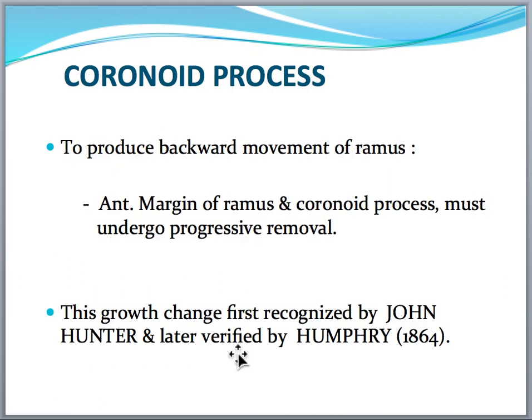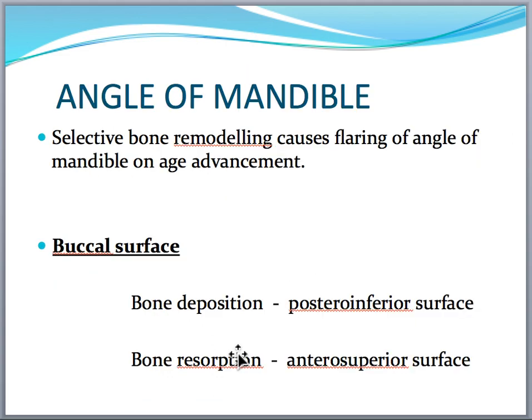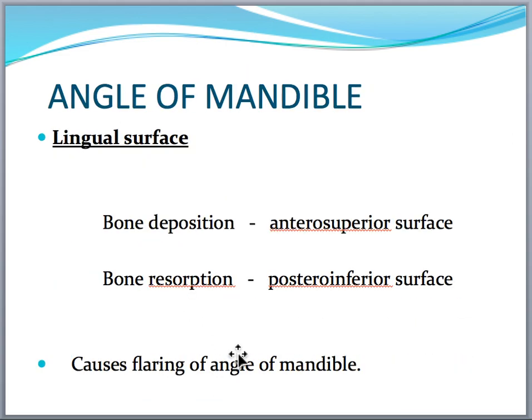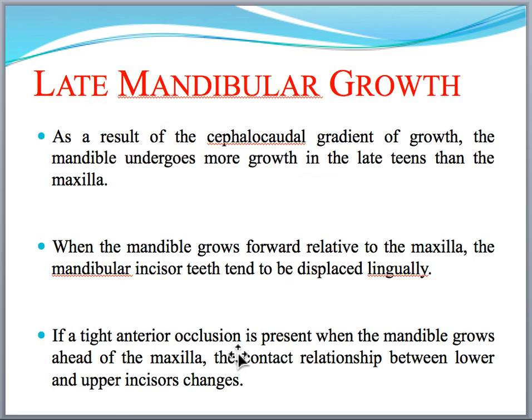Next comes the sigmoid notch, coronoid process, growth at the ramus, and the angle of the mandible. For the angle of the mandible, describe both the outer surface and lingual surfaces, including the lingual tuberosity. The antegonial notch is formed because of muscle pull in the region of the mandibular angle.